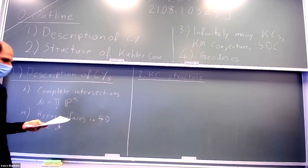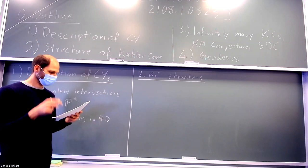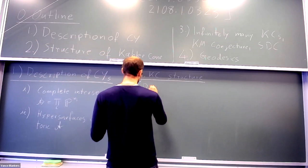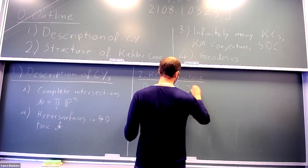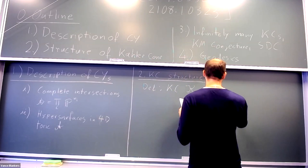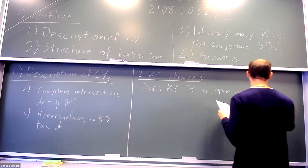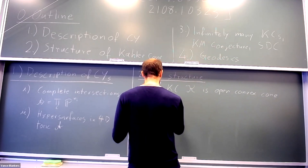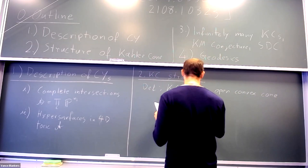The Kähler cone is actually a very important quantity in physics. It has implications for the moduli space of these Calabi-Yau manifolds, and Calabi-Yau manifolds have implications for the physics that comes out of string theory when you describe string theory with these Calabi-Yau manifolds. For the Kähler cone, I'll denote it with a script K. The Kähler cone is given by the set of Kähler classes on the Calabi-Yau manifold, and the Kähler cone contains a set of Kähler classes.